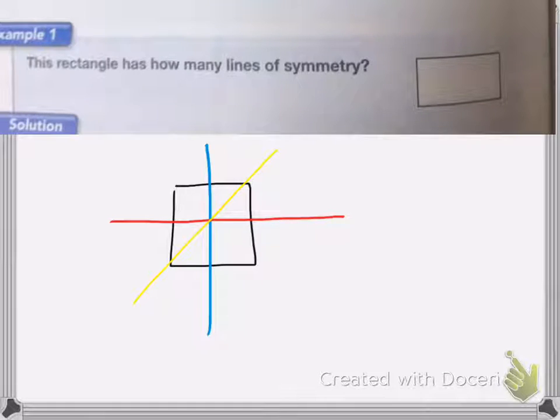It looks the same from one side to the other if I flipped it over. I end up actually having four lines of symmetry with a square.